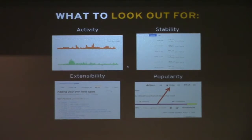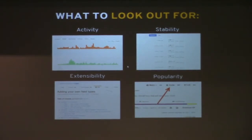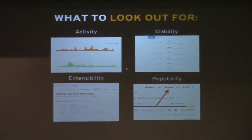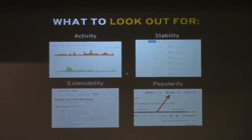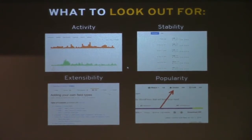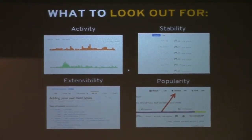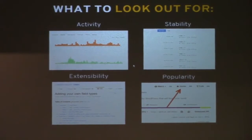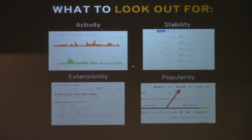What to look out for when you're evaluating these different repos you find on the internet: Activity — Bitbucket and GitHub make it really easy to see what kind of check-ins and commits have been made over the last year. Stability — are they using semantic versioning? Are they properly tagging it? Extensibility — what kind of documentation and methods are there to extend the functionality? And how popular is it? You can see the stars on GitHub and Bitbucket.